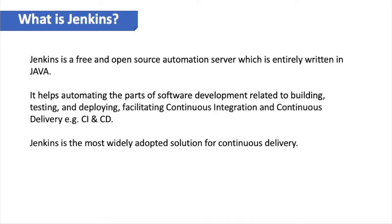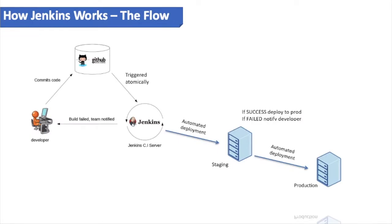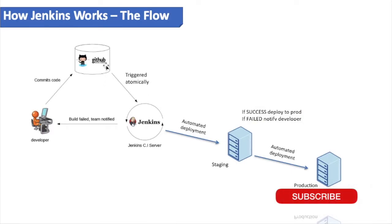Jenkins is the most widely adopted solution for continuous delivery. Let's see the workflow — how Jenkins works. The developer writes the code, and after finishing the project they commit the code to the GitHub remote repository. From there, a trigger is automatically fired and the Jenkins build starts.